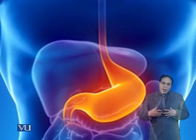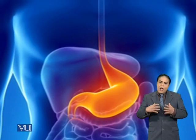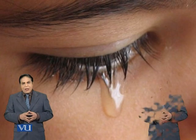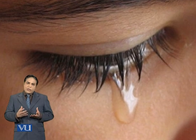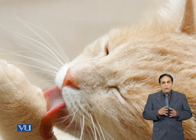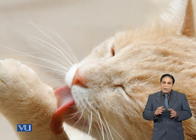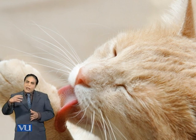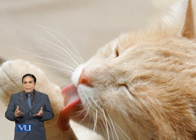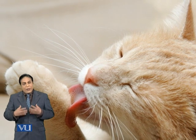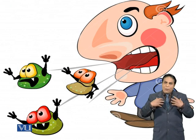Gastric juice in our stomach, which is there to degrade the food that we eat, can also destroy pathogens that may cause infection of the digestive system. Our tears and saliva have enzymes that can destroy many organisms. When cats or dogs get a wound, they lick their wounds because their saliva contains an enzyme called lysozyme. That enzyme can degrade the cell wall of many bacteria — they are essentially applying an antibiotic to their wounds. Sneezing can also remove potential pathogens from our respiratory tract.